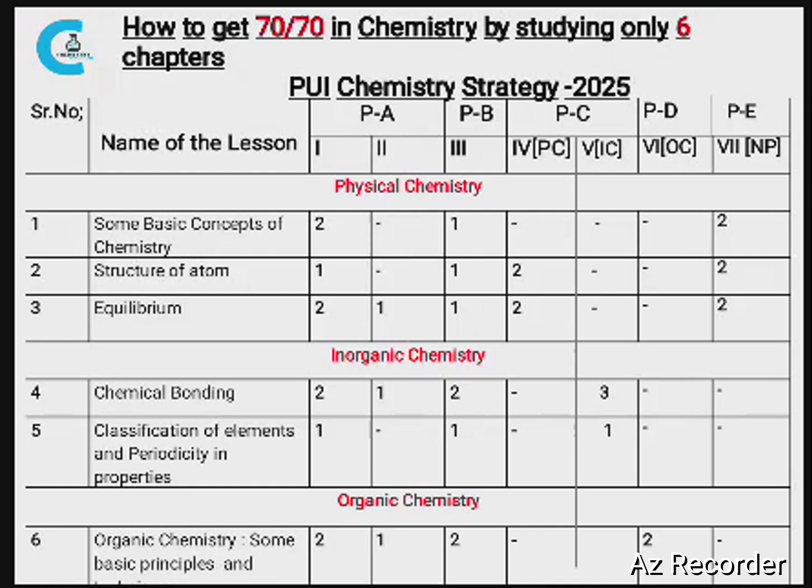For fill in the blanks: Equilibrium — 1, Chemical Bonding — 1, Organic Chemistry — 1. Once you get 3 fill in the blanks from these chapters, the remaining 2 can be easily identified using the options given.